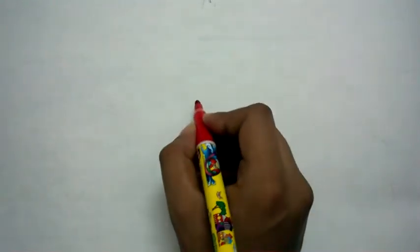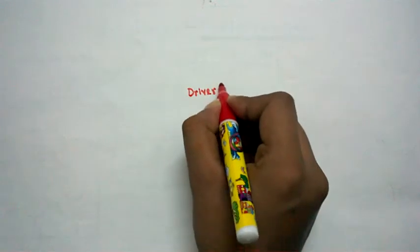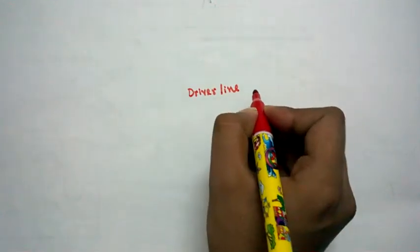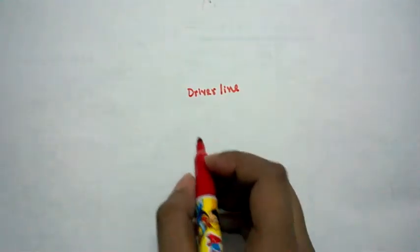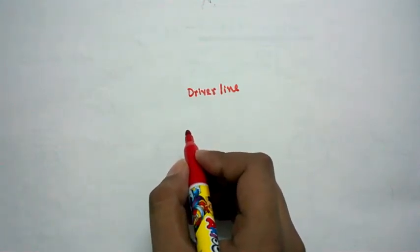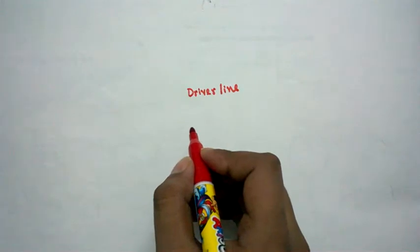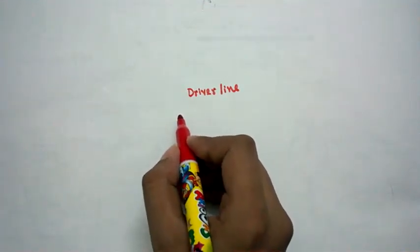So let's go into a new space and look at the genetics. For instance, if we write the driver line and let's say we want to knock down in the neurons, we would need a neuronal GAL4 driver. In our case, our neuronal driver could be ELAV-GAL4. So let's take the example of ELAV-GAL4.